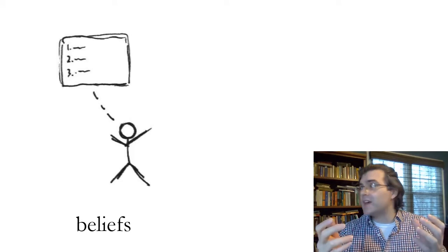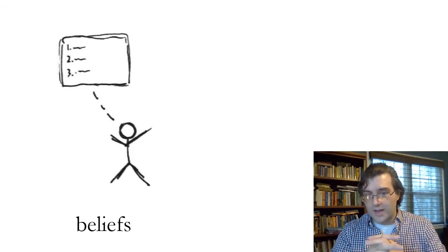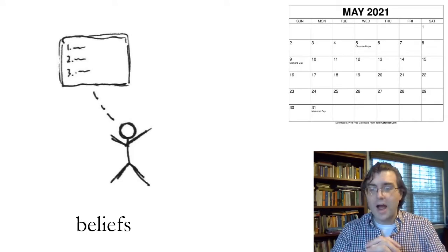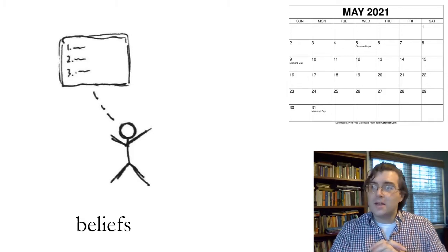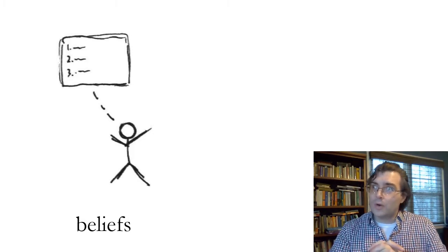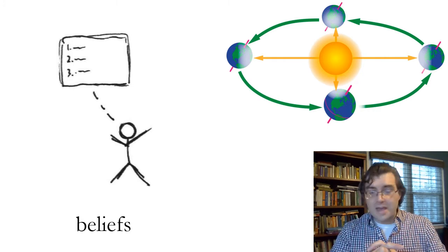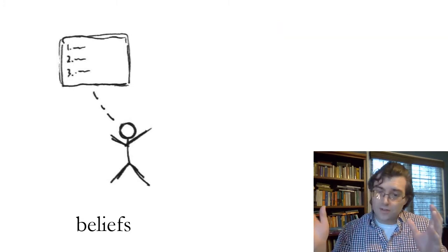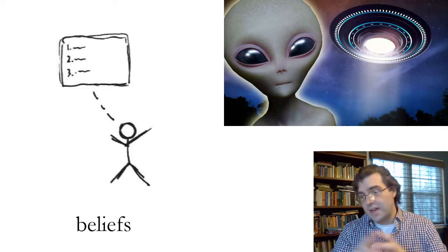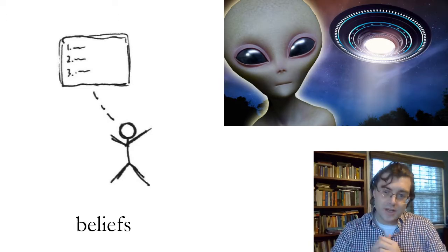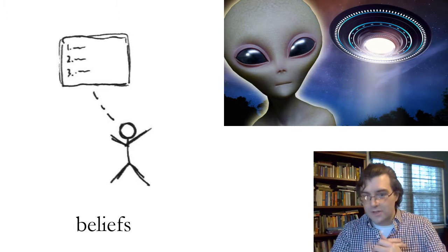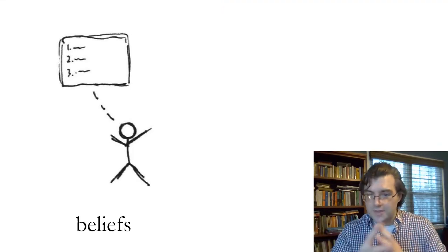In particular, I have in mind that we all have many beliefs. Any one of our beliefs can be expressed as a claim or a sentence. For instance, I believe that today, when I'm recording this video lecture, is Tuesday. I believe that the Earth rotates around the Sun, that it orbits the Sun. I may believe that there is intelligent life elsewhere in the universe, or I may not believe that. Personally, I'm not sure what I believe about that. I probably have no definite beliefs about that.